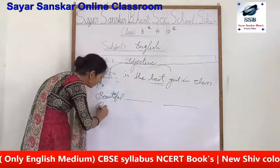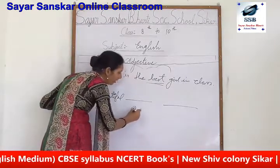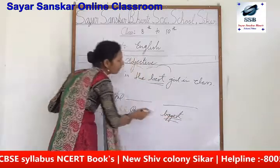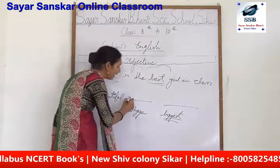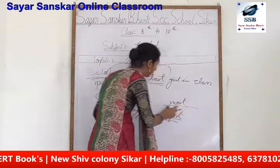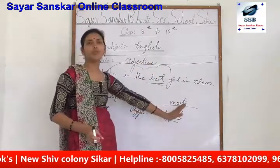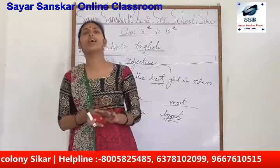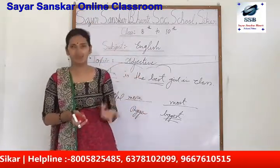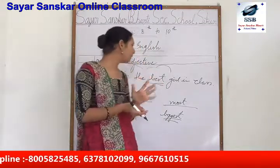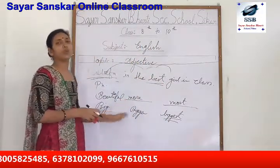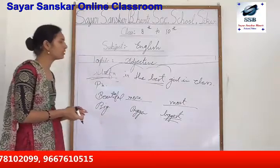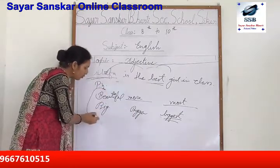We can add ER and EST, like big, bigger, and biggest. Another way is adding 'more' and 'most': beautiful, more beautiful, and most beautiful. You are supposed to find about ten to twenty adjectives and convert them into those degrees. I am assigning ten, but if you want to do twenty that is your choice. Twenty adjectives with all three degrees would give you about sixty words, and you will also use them in sentences.